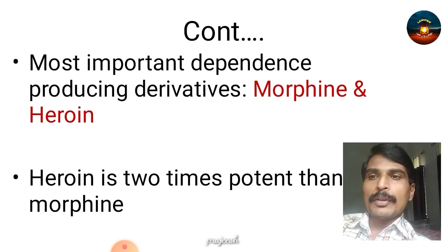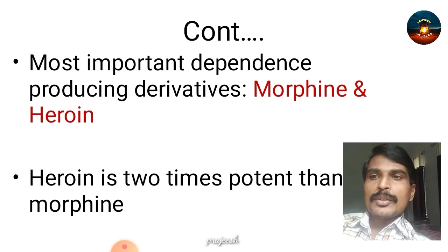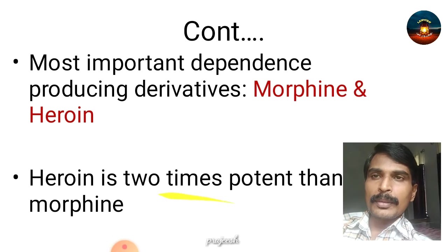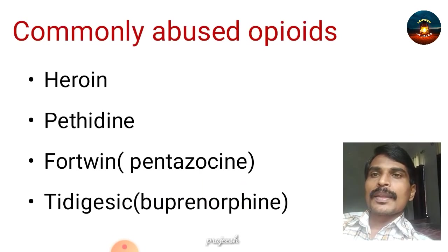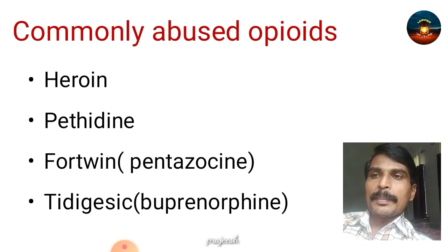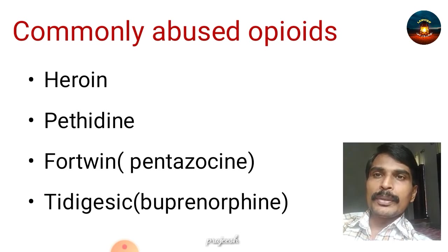Heroin is two times more potent than morphine — that is an important point. The commonly abused opioids include heroin, pethidine, fortwin or pentazocine, and Tidigesic or buprenorphine.